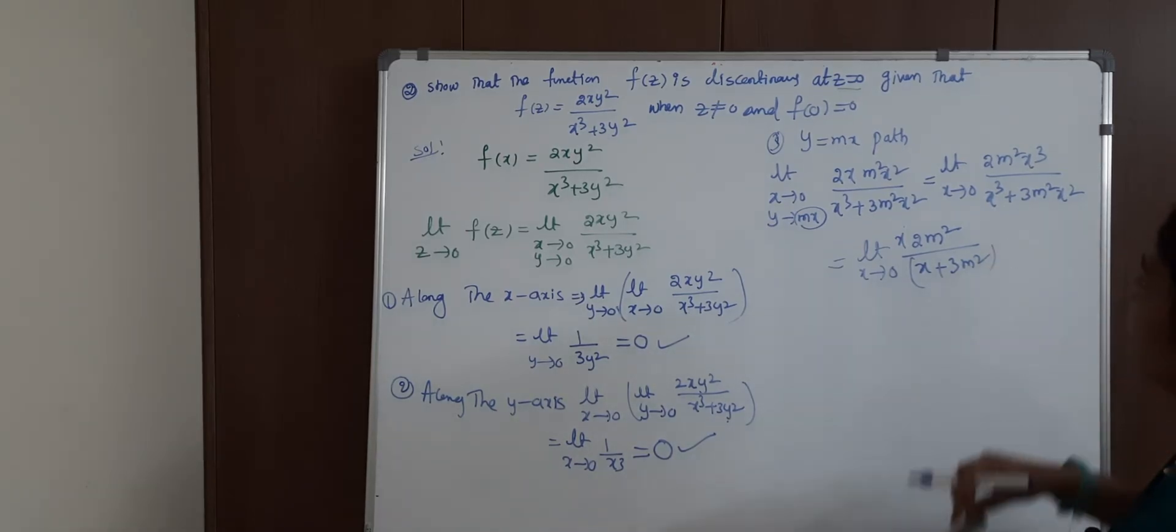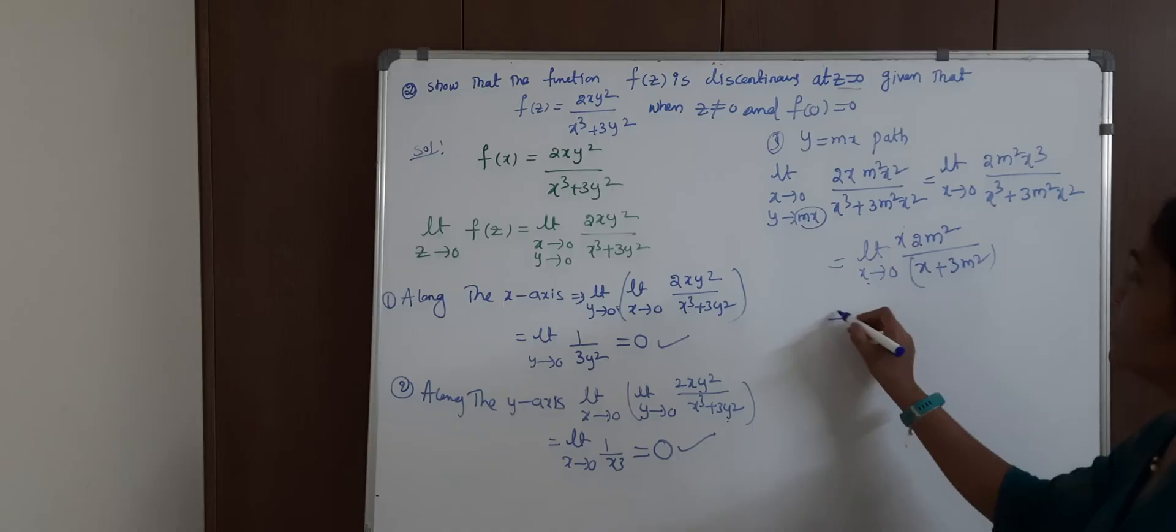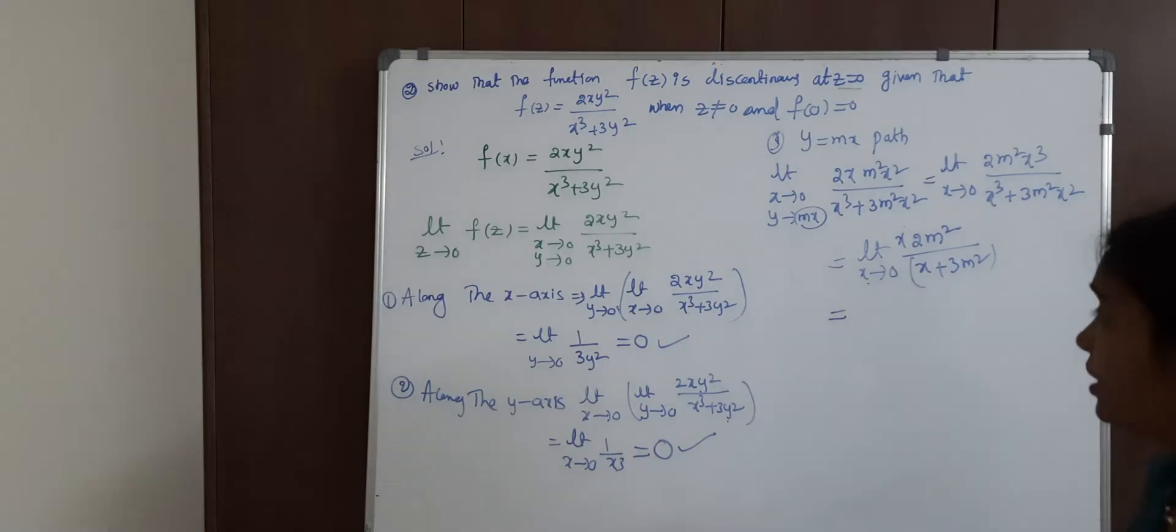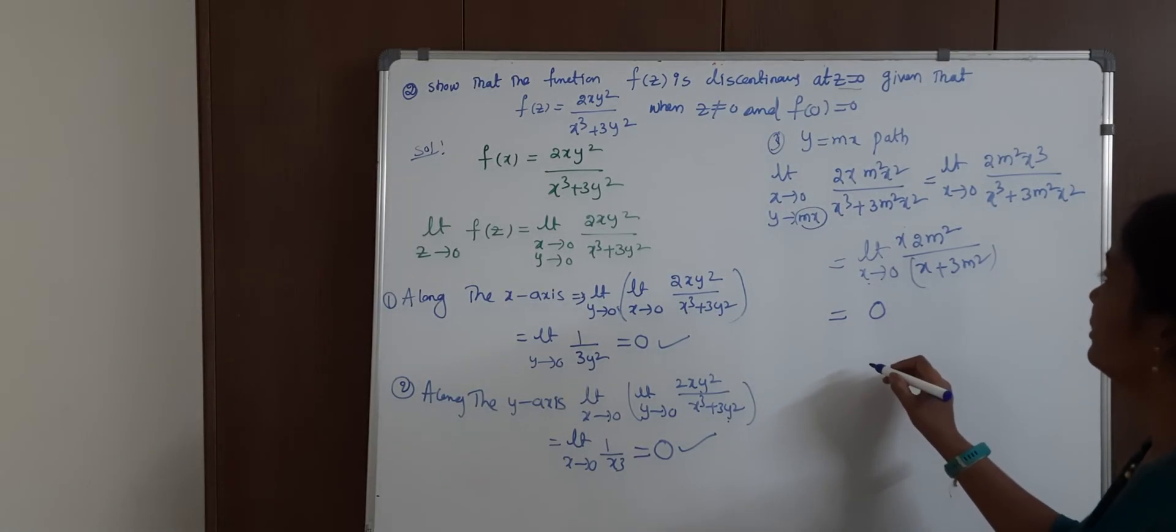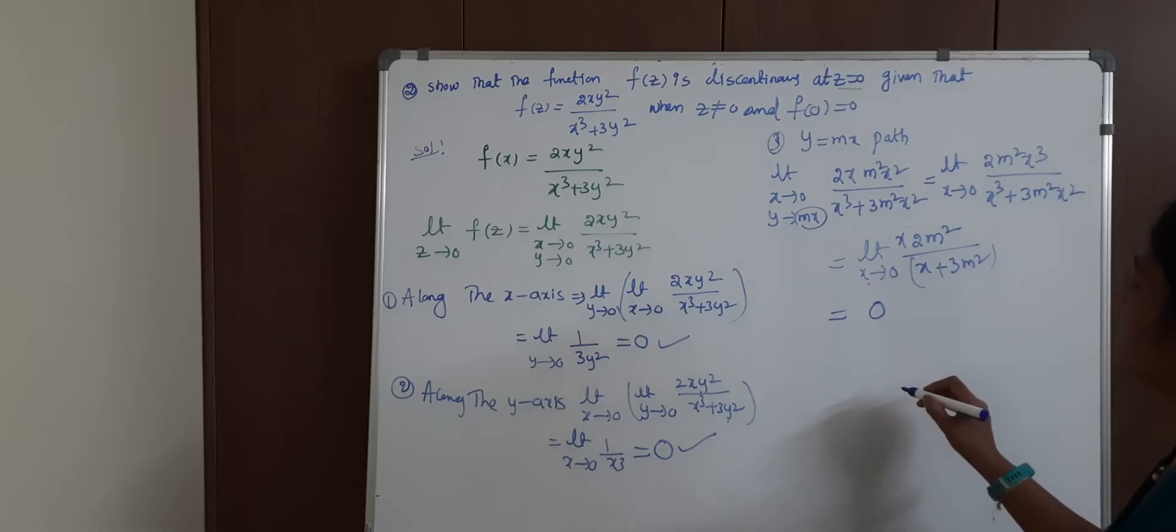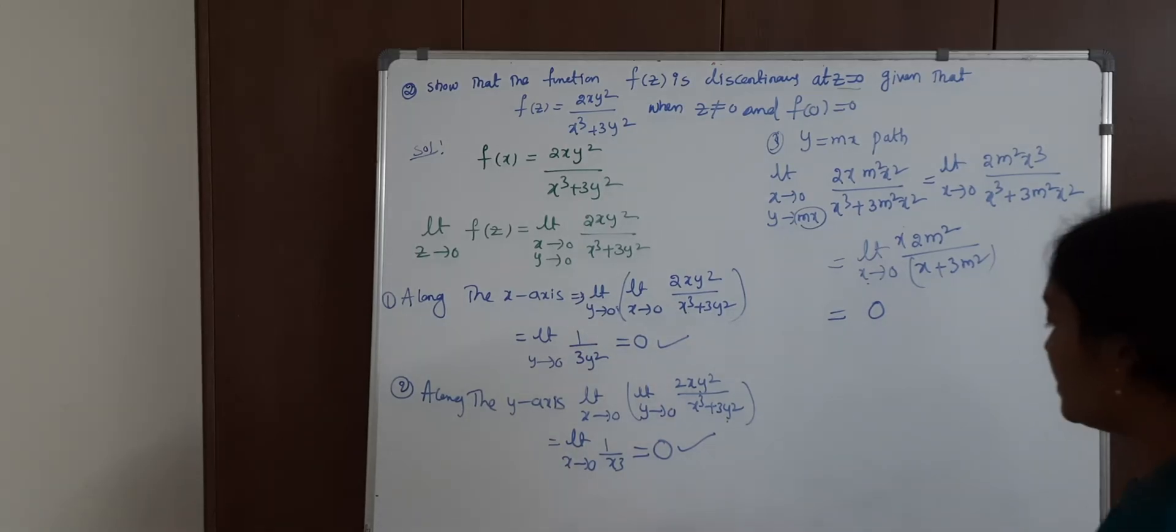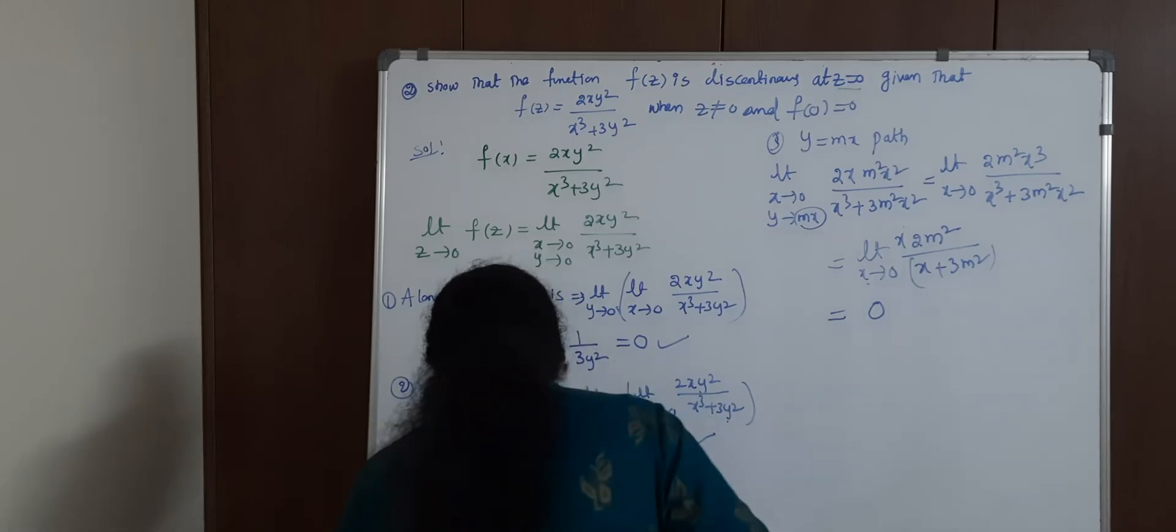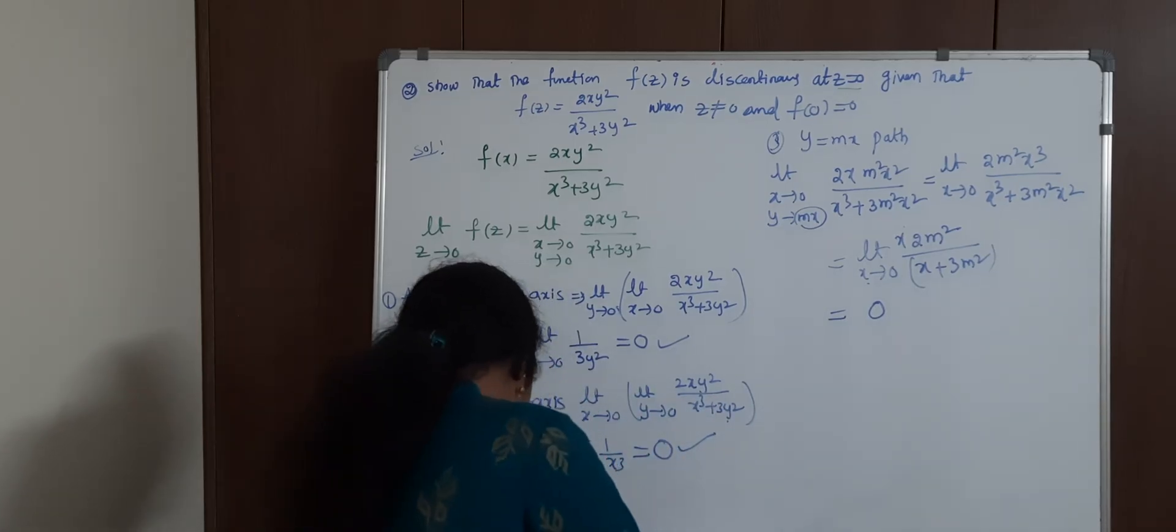After that, what we have to do? Put x→0. Is there any direct m term? No. Then put x→0. What is the value? It is also 0.